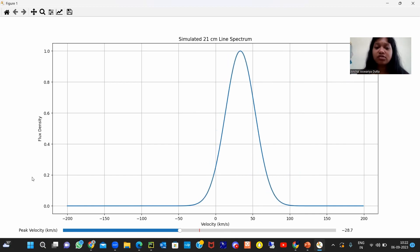The slider widget here is added, allowing the users to adjust the central velocity. Here, the thing you are seeing is the central velocity or the peak velocity of the spectral line interactively.